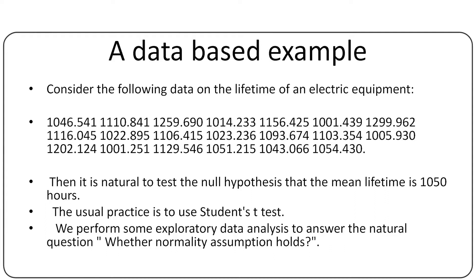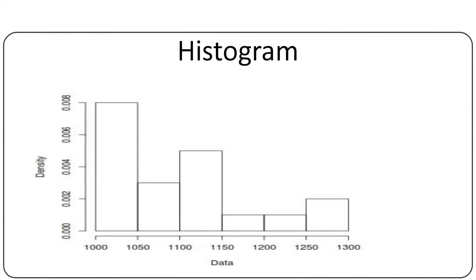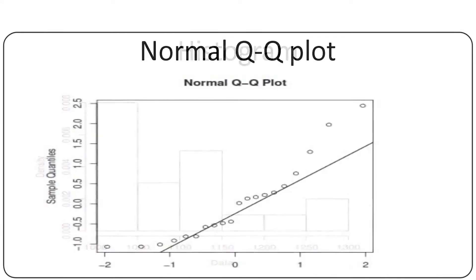First of all, note that the data is on lifetime. It is natural to expect early failure with high frequency. Thus, the histogram shows maximum density at lower values and the density decreases with increase of the lifetime variable. The histogram at least reveals that the underlying distribution is not symmetric.